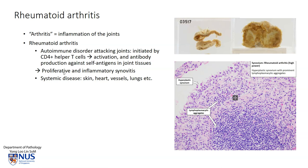These are the two main pathological processes that are happening, and this can also give rise to extra-articular manifestations in the skin, in the heart, in the blood vessels in the form of vasculitis, and in the lungs, etc.